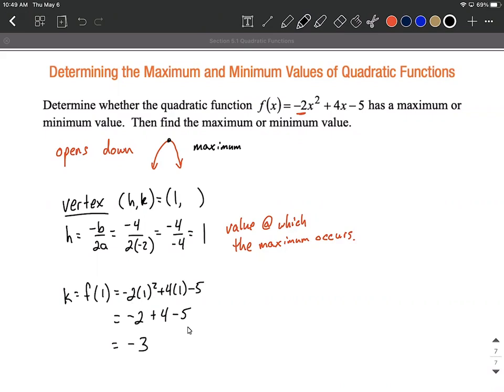So our ordered pair for the vertex is (1, -3). But the other thing to note is this is actually our maximum on this problem. The y-value is going to be the maximum. The x-value is the value at which the maximum occurs, which can be a little bit confusing, but hopefully this makes it easier.